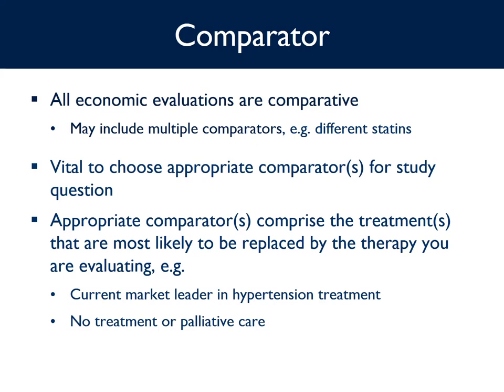How do you choose the comparator? The list of comparators must include the treatment or treatments most likely to be replaced by the therapy you are evaluating. For example, if you are evaluating a new first-line treatment for hypertension, your comparators must include the current market leader in that population. If you are assessing a treatment for a condition where most patients receive no therapy, an appropriate comparator might be no treatment, palliative care, or best supportive care. If unsure, speak to clinicians and review sales data.